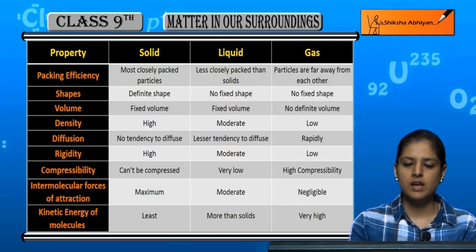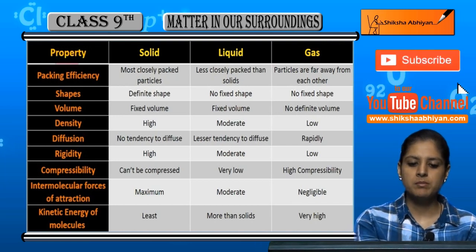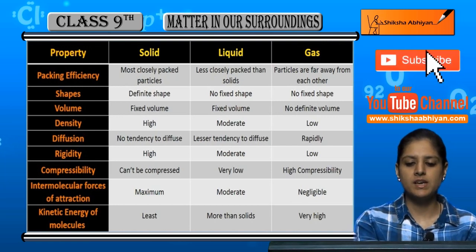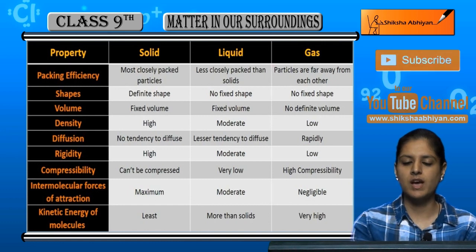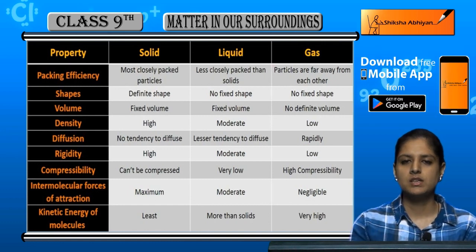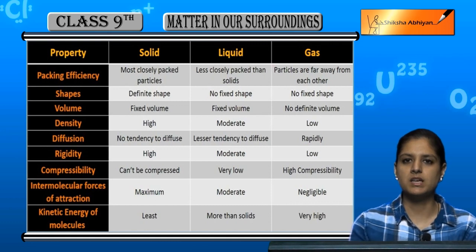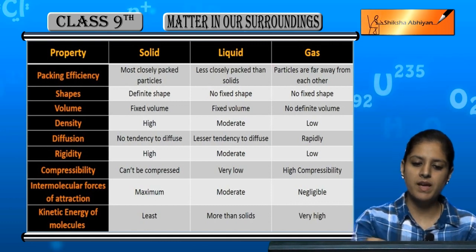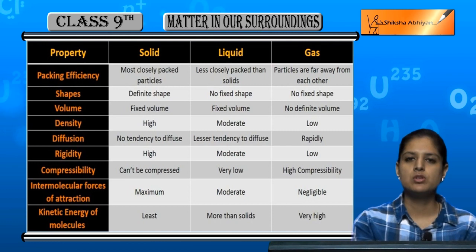Here is the comparison table of states of matter. On one side we have written the property, and in the remaining columns we have the properties of solid, liquid, and gas. The first property we have written is packing efficiency.